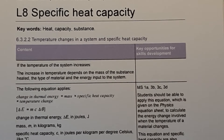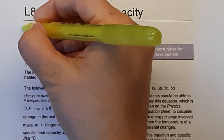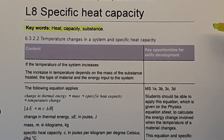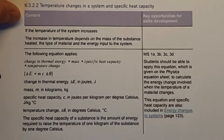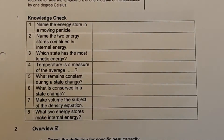Hello and welcome to GCSE Particle Model of Matter. This is Mrs Castanera teaching, and we're on Lesson 8: Specific Heat Capacity. Today's keywords are Heat, Capacity, and Substance. Here we have the specification for the course, which runs us through everything we'll be learning in this lesson. We have the Knowledge Check — please complete the eight questions and pause the video whilst you do that.